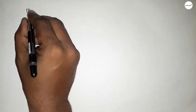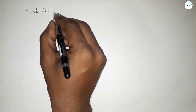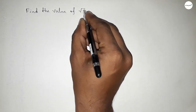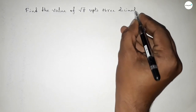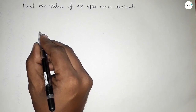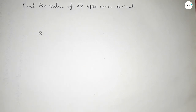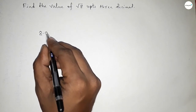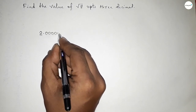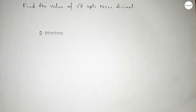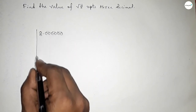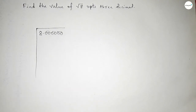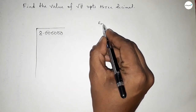Hi everyone, welcome to SI Share Classes. Today in this video we have to find out the value of root 8 up to 3 decimal places using the division method. First of all, write 8, then place a decimal point and add six zeros after the point for three decimal places. Now make them into pairs, so we get three pairs. Draw the division symbol and mark some rough space.